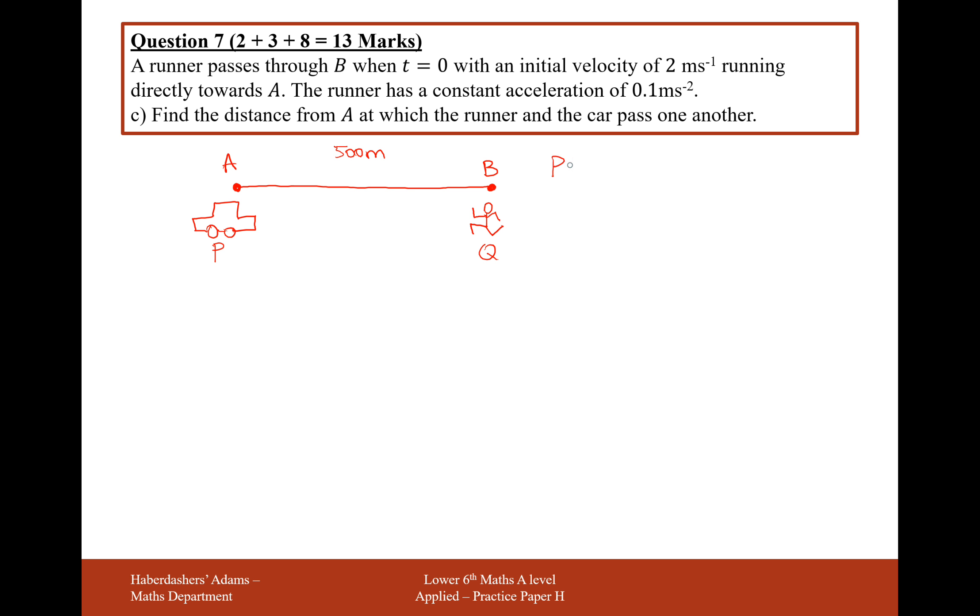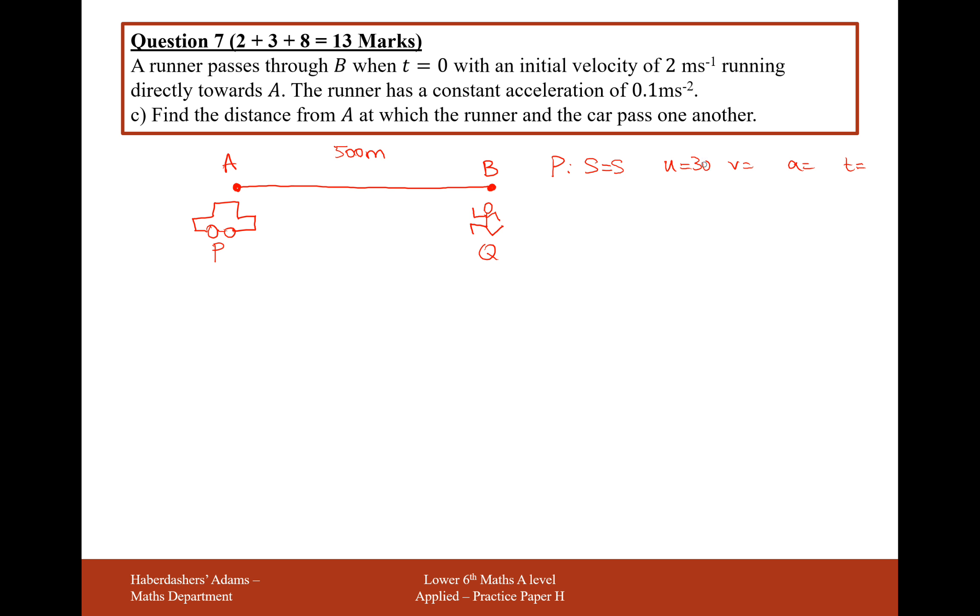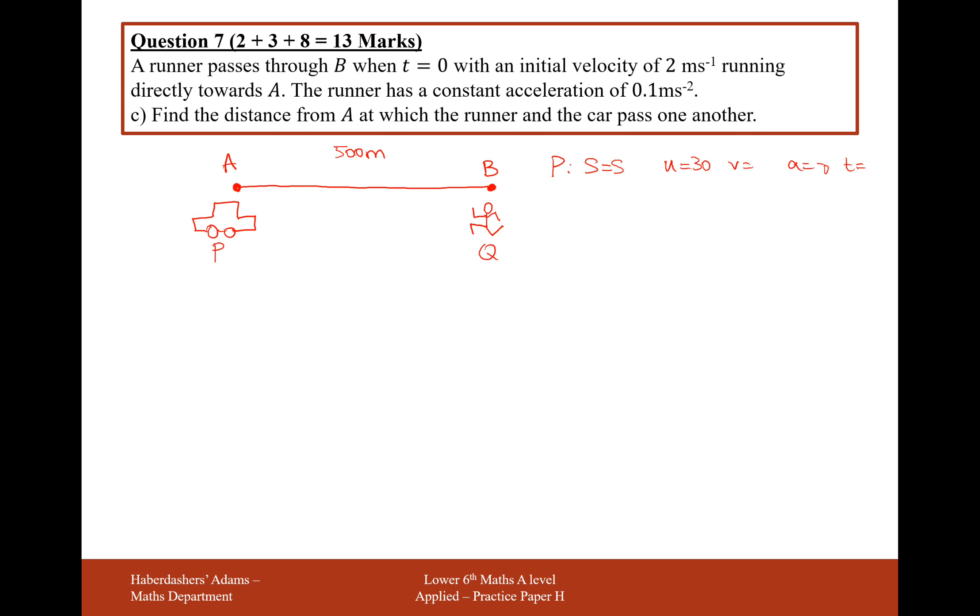For P, the SUVAT variables S, U, V, A and T are going to be: it's going to travel a distance S that we want to find out. Its initial speed, when time equals zero, this part here is going to disappear, so our initial speed is 30. Final speed we don't mind. Acceleration we worked out was minus 0.8. And the time is just going to be T.